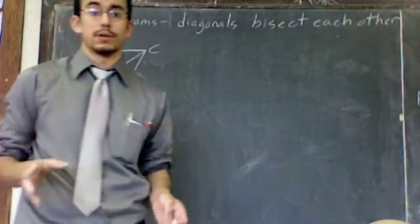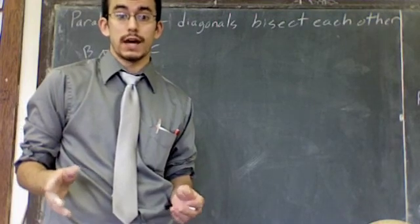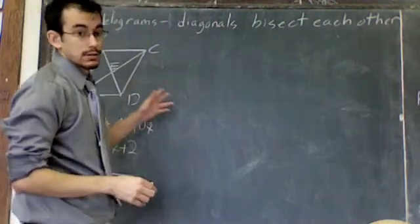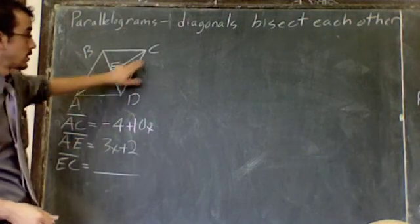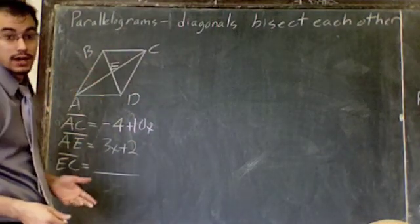Alright, so here in this video I'm going to show you how to deal with parallelograms and their diagonals. The rule for parallelograms and their diagonals is that the diagonals from corner to corner bisect each other, they cut each other in half.